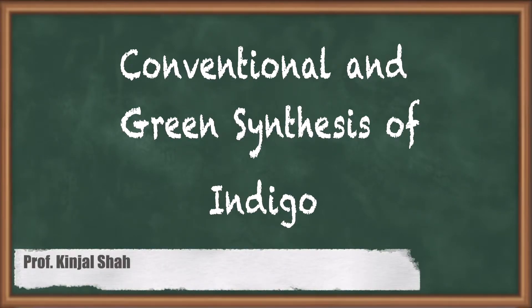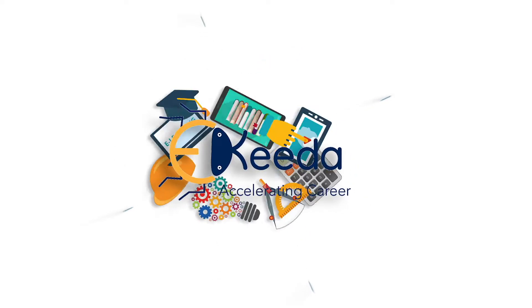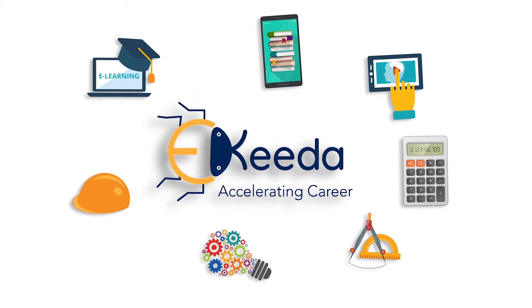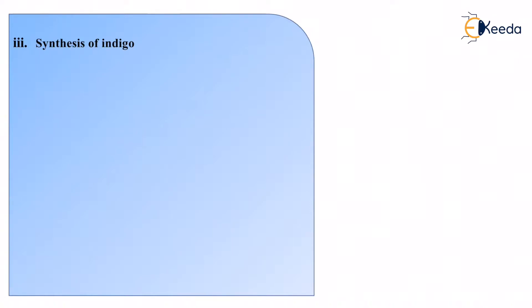Hello students. In today's video we are going to study about two ways of actually making the compound indigo. Indigo is an organic compound and it has various uses, and that is the reason why there are various factories set up just to make this particular compound. When we make this compound there are various ways of doing so. Over here we are going to study what is the greener way — a methodology by which indigo can be prepared that will not impact the environment and will not have any hazardous effects environmentally.